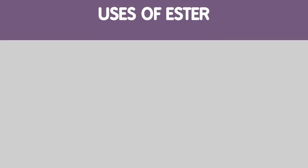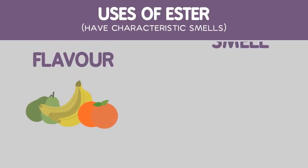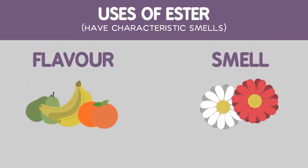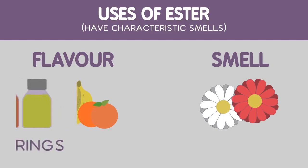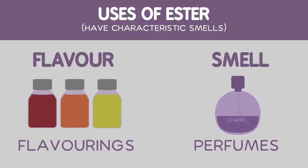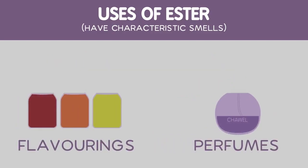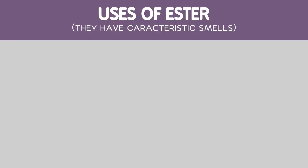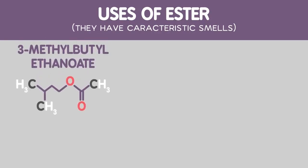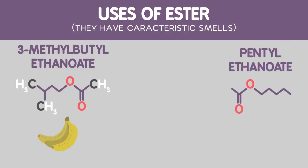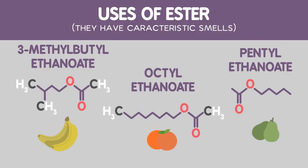Now, let's take a look at what esters are actually used for. Esters have characteristic smells and are responsible for the flavor of foods and smell of flowers. They are therefore useful as flavorings and perfumes. Some examples of esters, together with their smells, are 3-methylbutylethanoate, or bananas; pentylethanoate, pears; and octylethanoate, oranges.